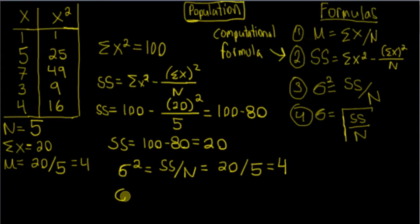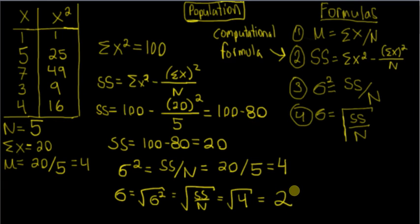And then the standard deviation for the population is the root of the population variance, which is also the root of sum of squares over n, which is going to equal the root of 4. And finally, we're left off with a value of 2. So our population standard deviation is 2.